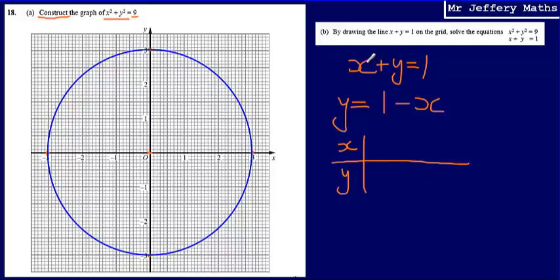Or the alternative is I could do what I did to draw the graph of x squared plus y squared is equal to 9. I could just say x is 0, take that coordinate, y is 0, take that coordinate.